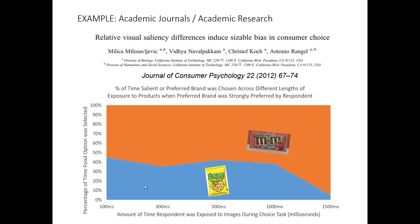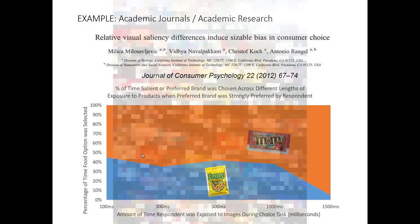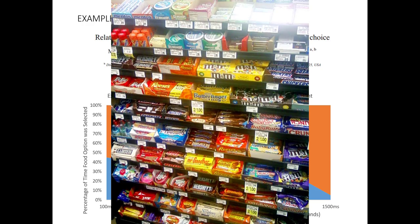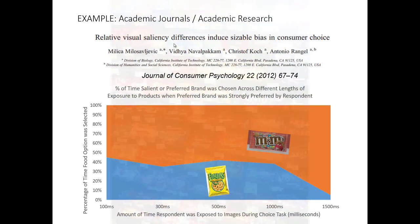Now imagine if you're a marketer thinking about product packaging designs for low involvement or impulse buy goods. This would suggest that designing packaging that is visually salient might be a useful way to increase sales. So, 'relative visual saliency differences induce sizable bias in consumer choice' sounded like a big academic mouthful, but when we looked a little closer, we realized it gives interesting insights applicable to solving a practical marketing problem.